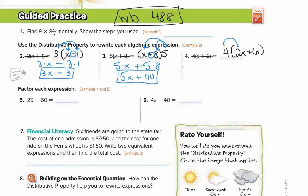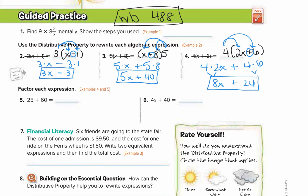For number 4: 4 times 2x plus 4 times 6. You can multiply something with an x by something without because these can be split up. So 4 times 2 is 8, and 8 times x is 8x. Therefore 4 times 2x is 8x, plus 4 times 6 is 24, giving 8x plus 24.